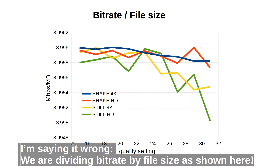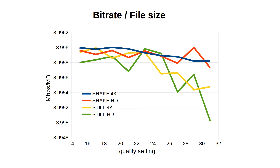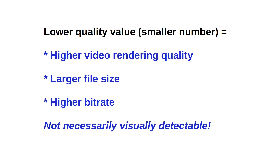But what happens if we divide file size in megabytes by bitrate in megabits per second? Then we see how much bang we get for each unit of file storage. The lines are almost flat — they don't seem flat here because I zoomed in a lot. Upon closer inspection, the still HD video has maximum value again at 23, as we saw with image sharpness. The still 4K also doesn't look bad at all at the value of 23. The videos with shaking don't give us good answers. So it's time for filtering out the take-home messages.